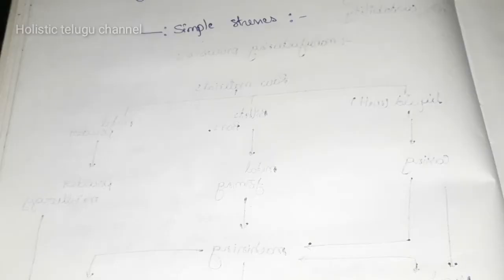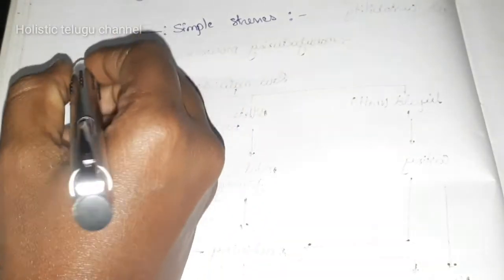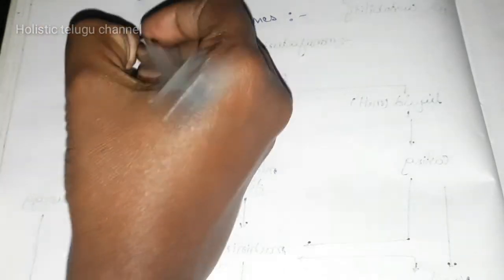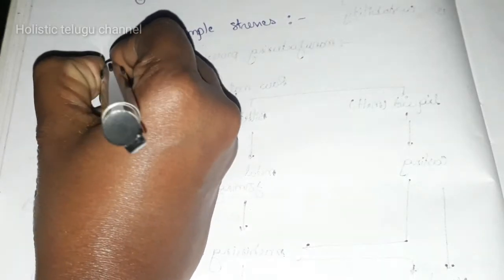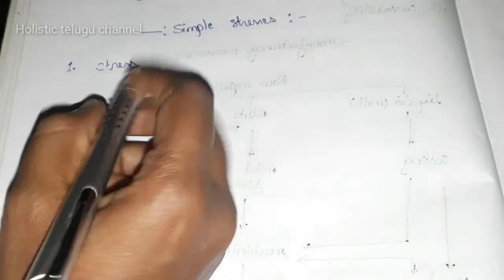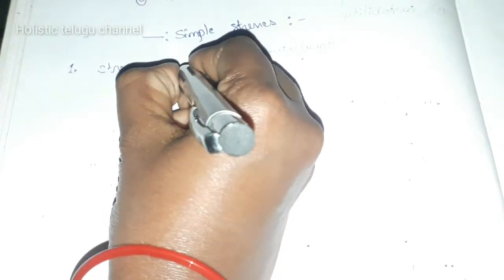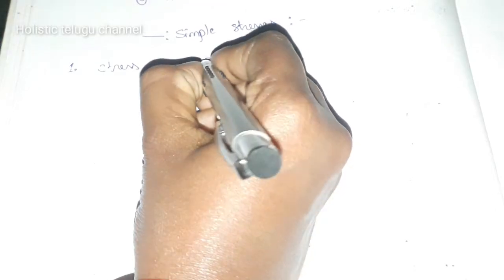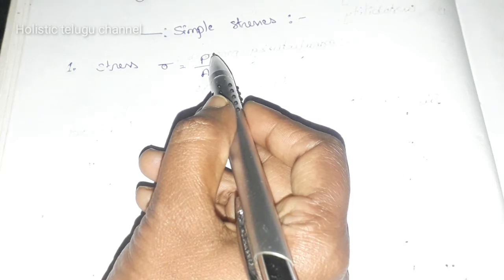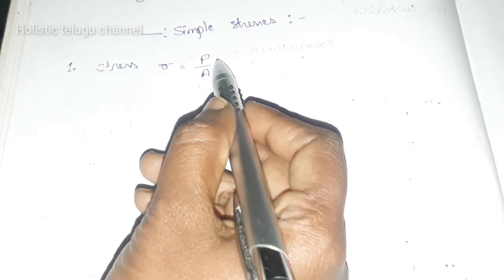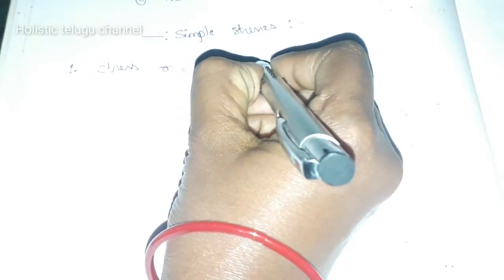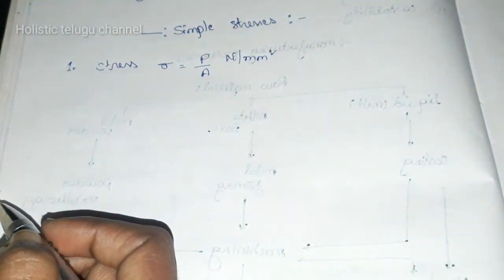The first one is stress. Stress is denoted by sigma. The formula is P by A, where P is force or load and A is area. Units are Newton per mm square.